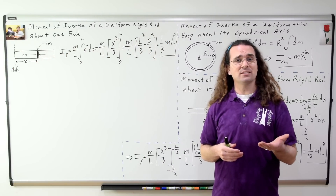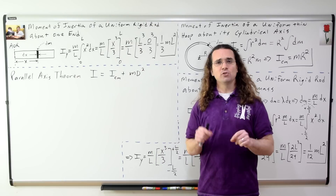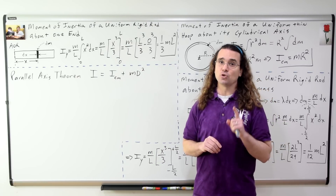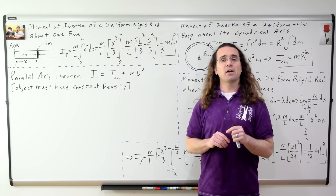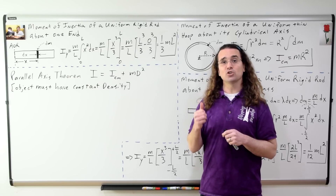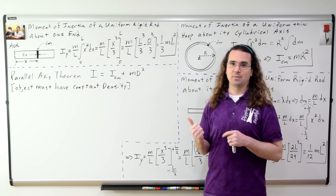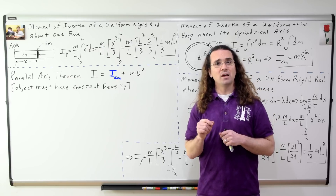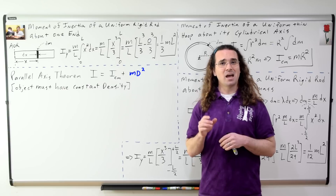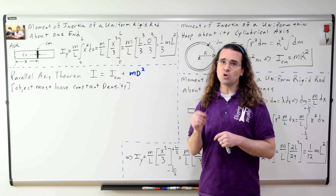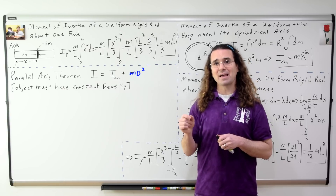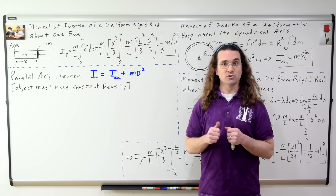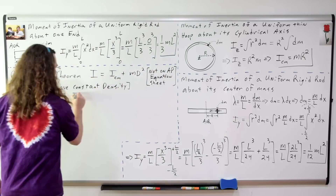Now let's look at the parallel axis theorem. If you know the moment of inertia of a rigid object about its center of mass, and that rigid object has uniform density, you can find the moment of inertia about some other axis using the parallel axis theorem. The moment of inertia about some other axis equals the moment of inertia about the center of mass plus the mass of the object times d squared, where d is the distance between the new axis of rotation and the center of mass. Note that this equation is not on the AP equation sheet.